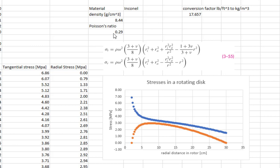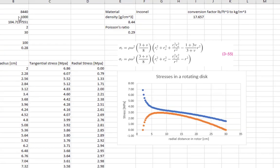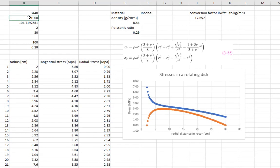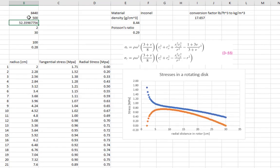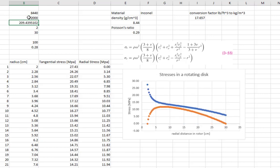You also need to know the Poisson's ratio of the material in order to do this calculation. So the nice thing about all of these sorts of problems when you build a spreadsheet is you can see the effect of angular speed. If we lower the angular speed, we are going to lower the stresses. If we increase the angular speed, we are going to increase the stresses.